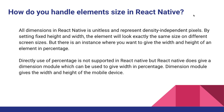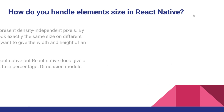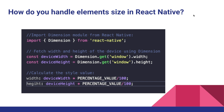Ninth question: how do you handle element size in React Native? All dimensions in React Native are unitless and represent density-independent pixels. Setting a fixed height and width will look the same across different screen sizes. However, when you want to give width and height as a percentage, direct use of percentage is not supported. React Native provides a Dimensions module you can import, then use Dimensions.get('window') to get the device width and height, and calculate percentage-based dimensions from those values.